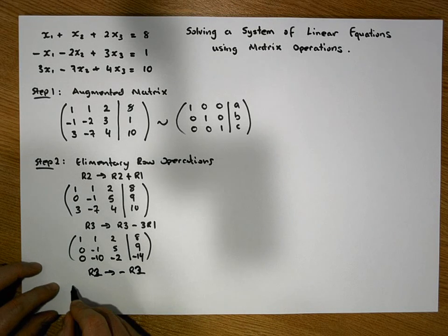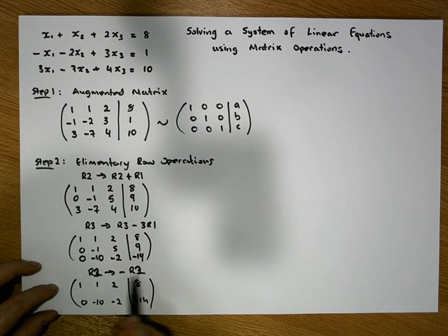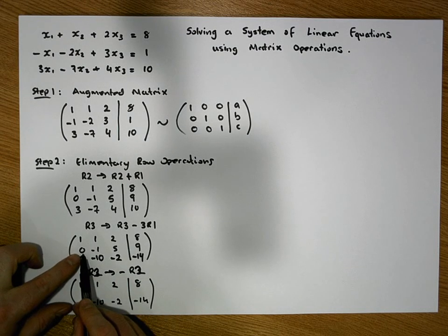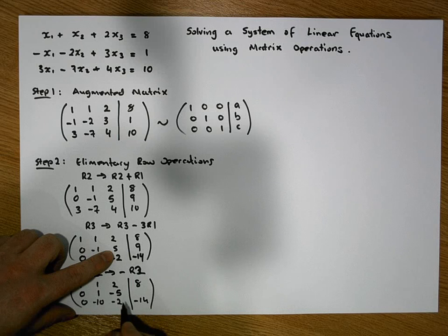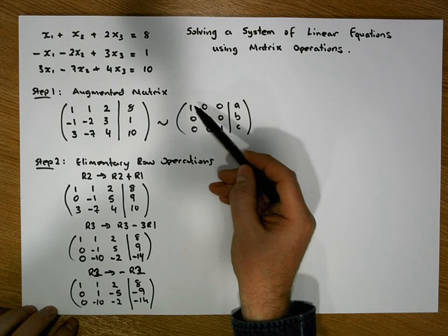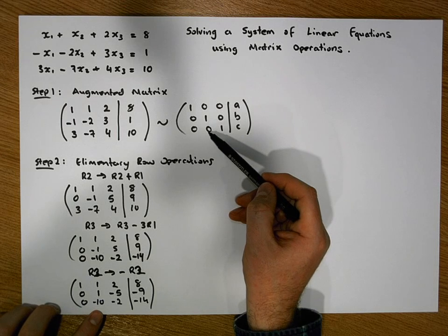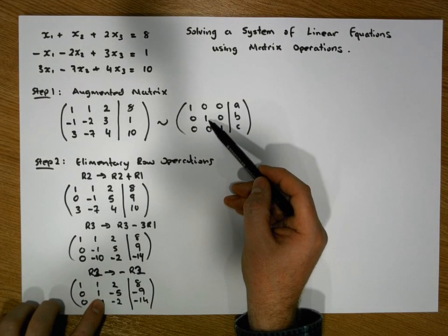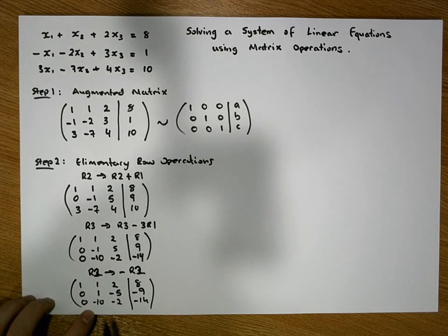After the operation, rows 1 and 3 remain: 1, 1, 2, 8 and 0, -10, -2, -14. Row 2 becomes: 0×(-1)=0, -1×(-1)=1, 5×(-1)=-5, 9×(-1)=-9. So row 2 is now 0, 1, -5, -9. We now have two 1s on the main diagonal. Next, we make the entry below the second 1 — the -10 in row 3 — a zero, by adding 10 times row 2 to row 3.